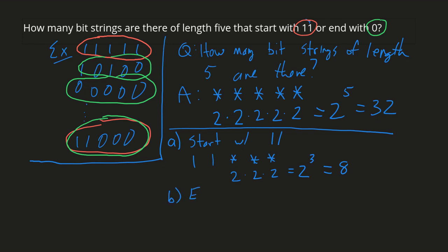What about bit strings that end with 0? Well, they're going to be of the form *,*,*,*,0. So that's 2 times 2 times 2 times 2, or 2 to the 4th power, which is 16.